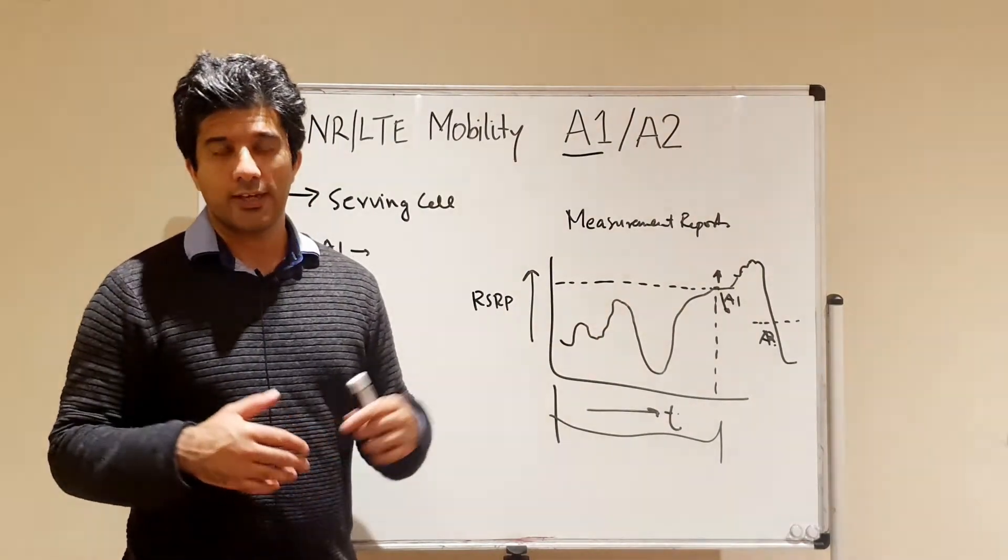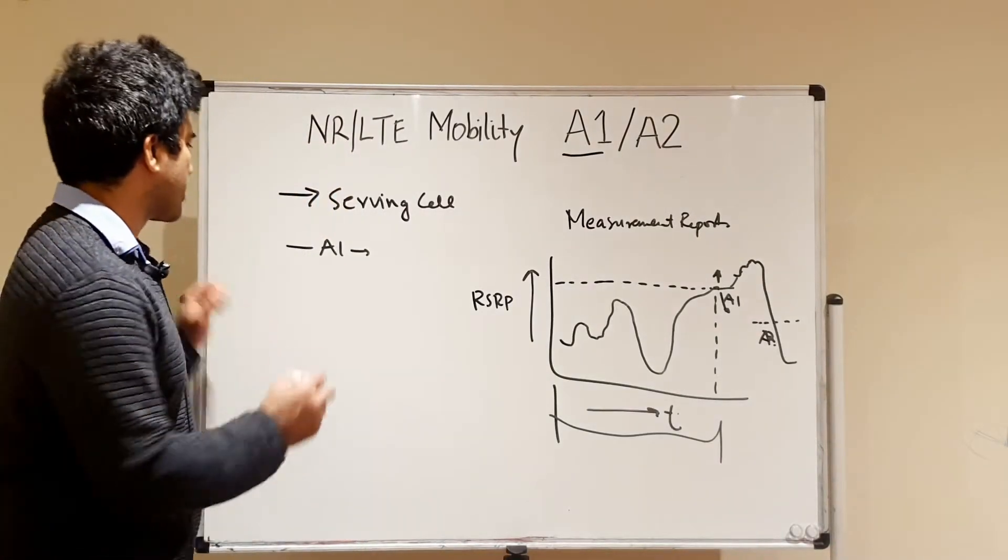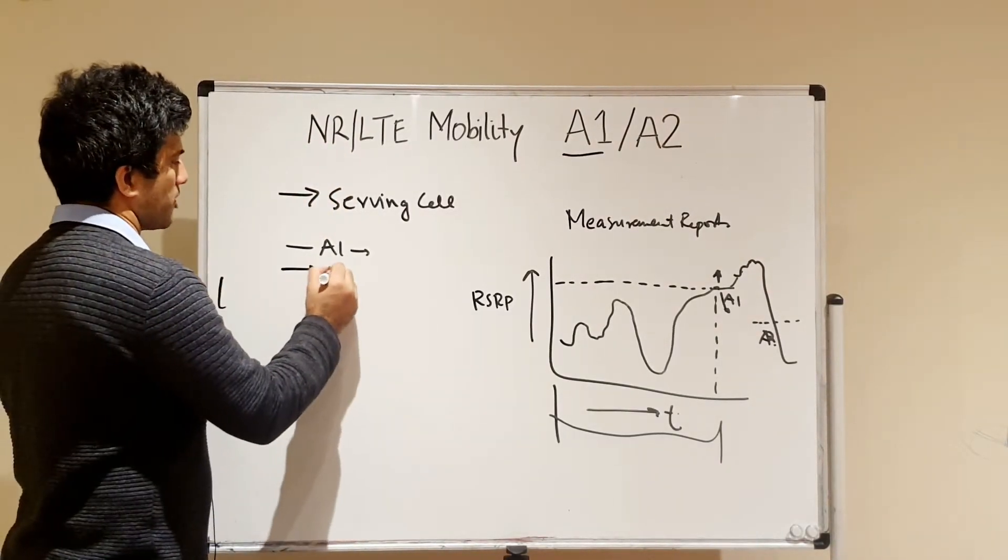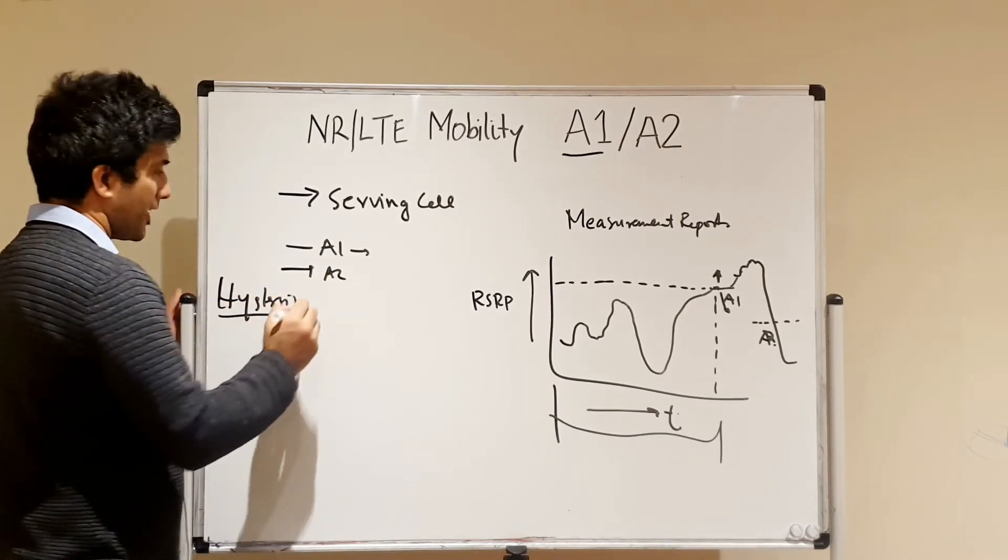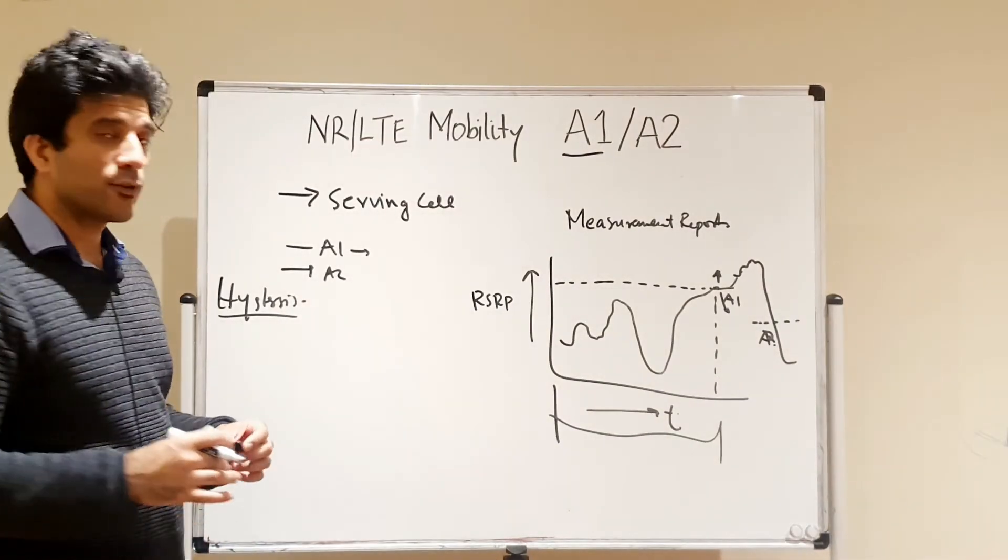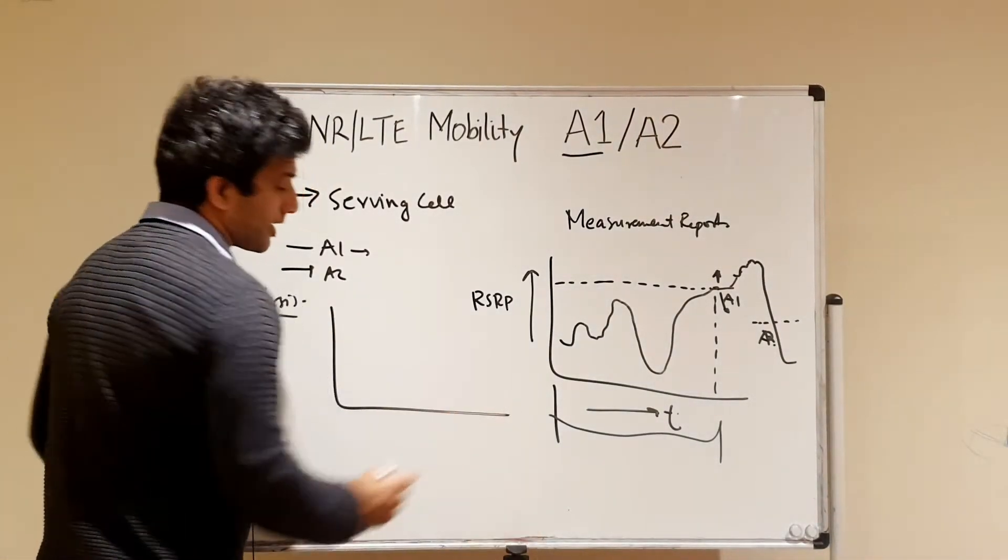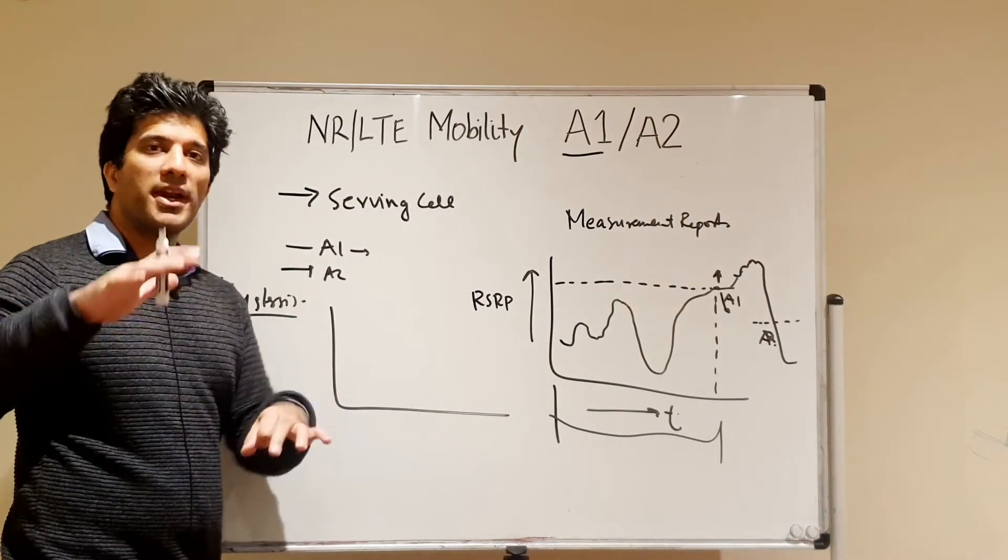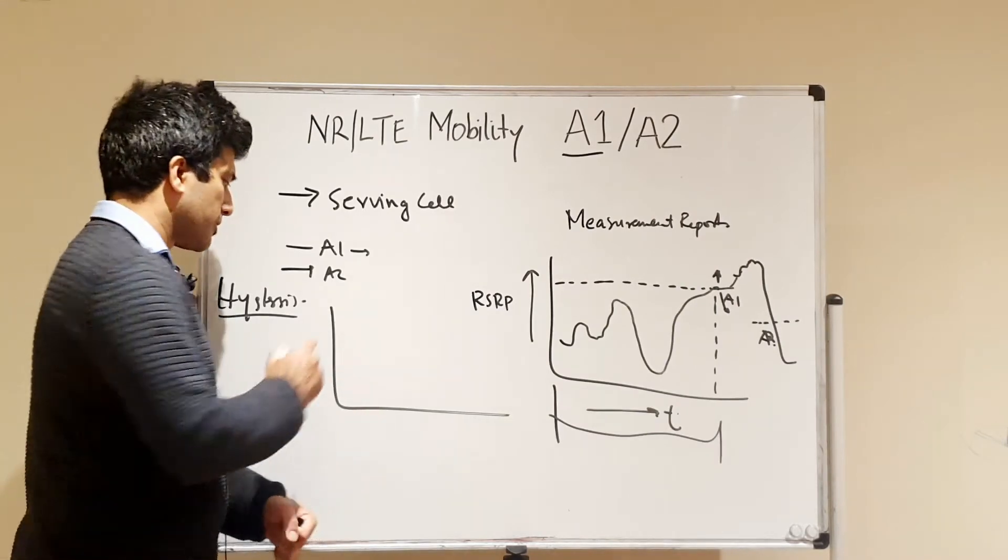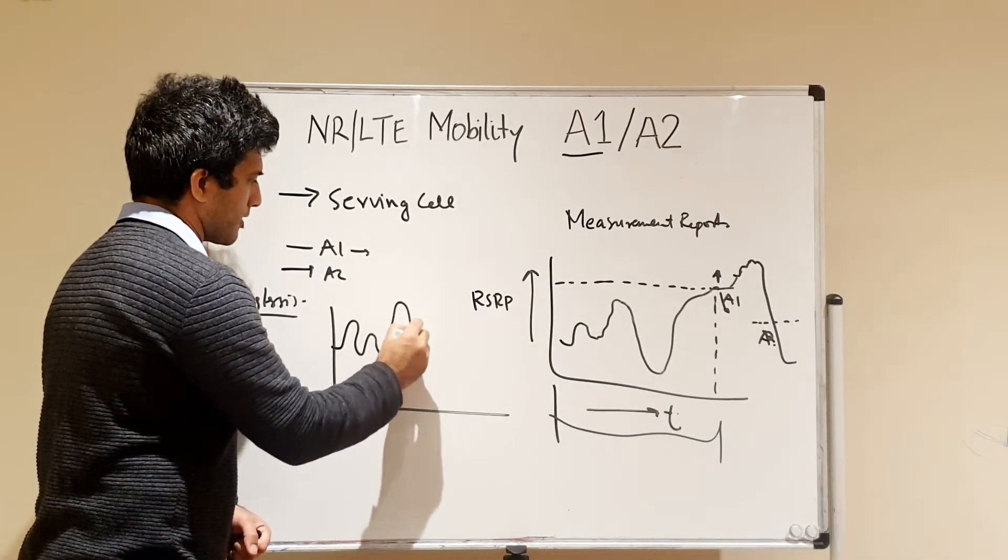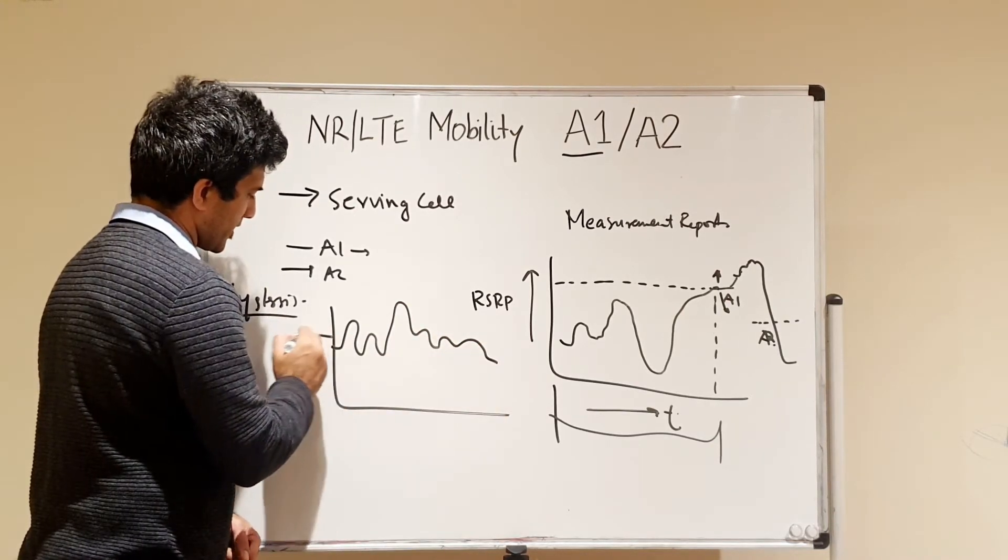Now the concept of hysteresis is actually very important. You would always see it in parameter settings. The concept is that the level of the UE basically goes up and down very frequently as it is a radio environment, so it will be going like this. So if you have a particular threshold, for example A1 here.